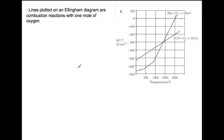So how do we use Ellingham diagrams to work out when metals can be extracted? The lines that are plotted on an Ellingham diagram are combustion reactions, which are shown using one mole of oxygen. You'll find the combustion reaction for a metal, and you'll find the combustion reaction for the reagent that we're using to extract the metal. Common reagents are carbon, carbon monoxide, and hydrogen.